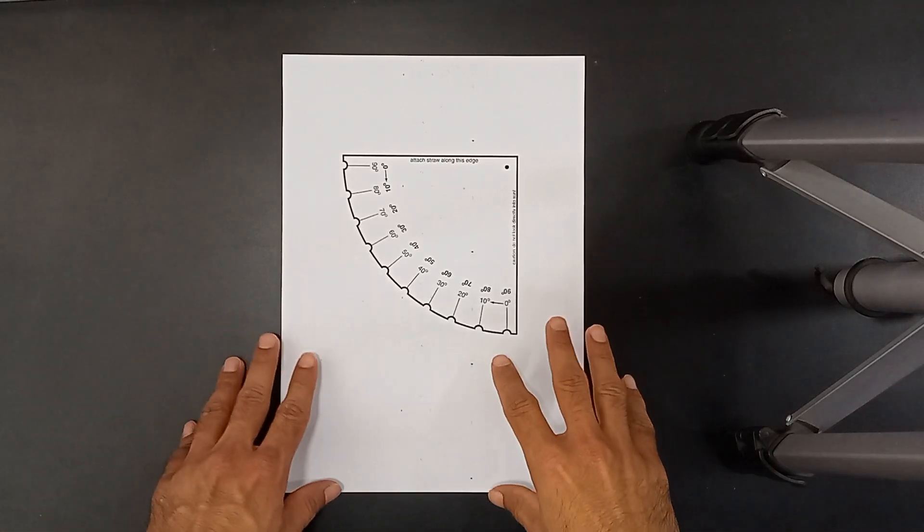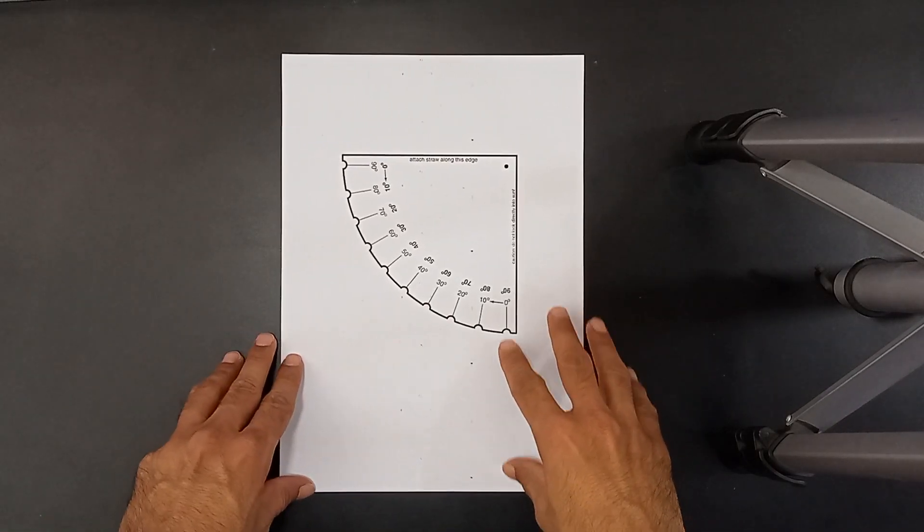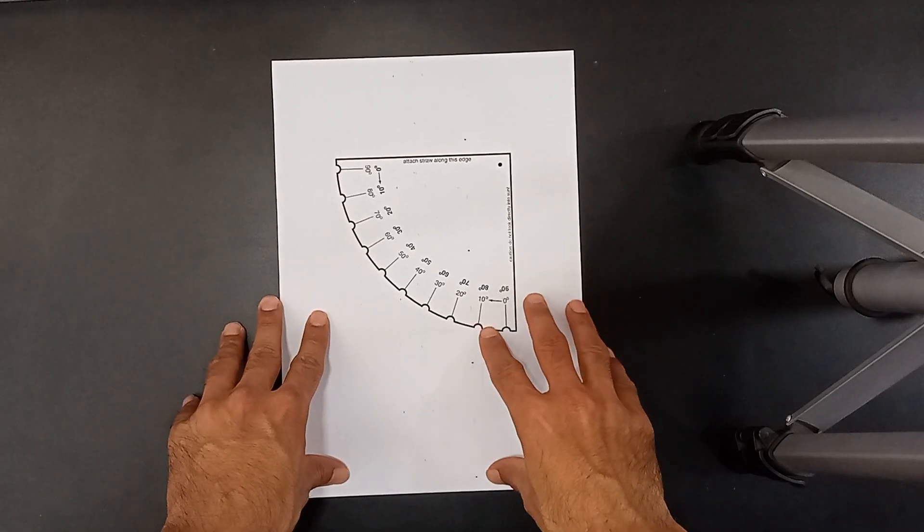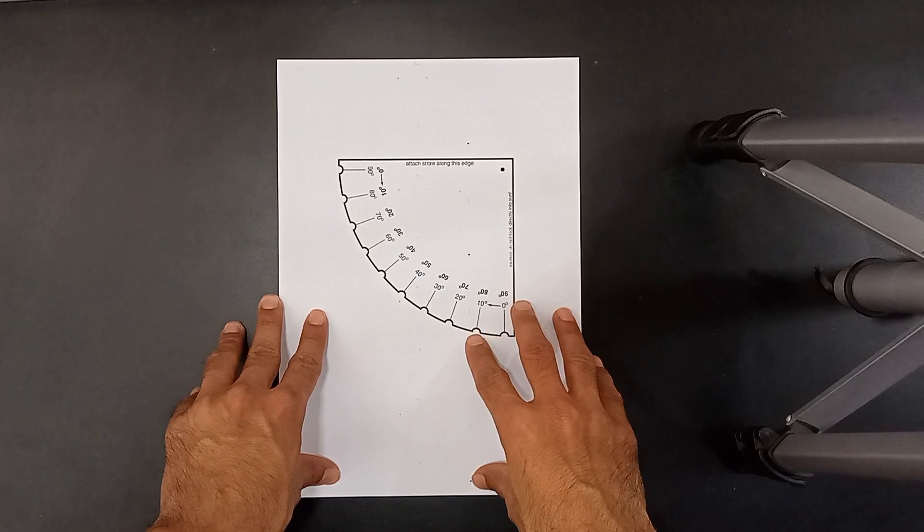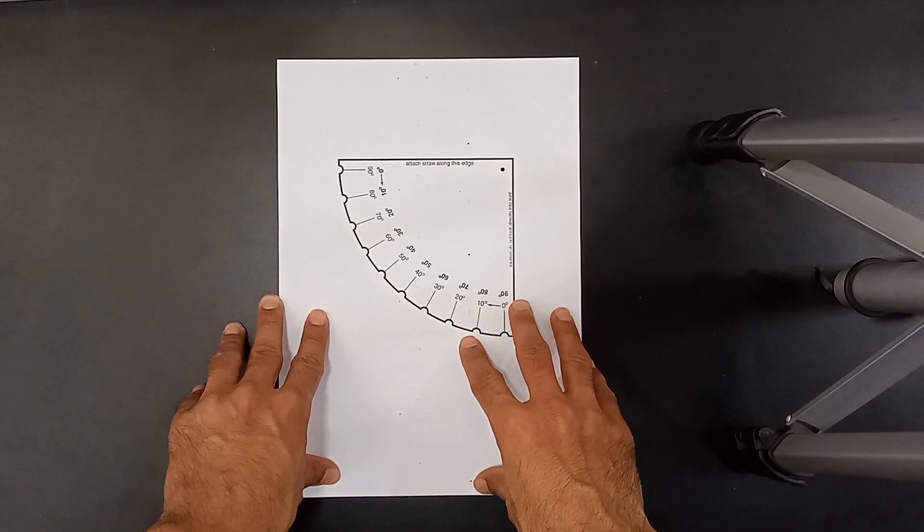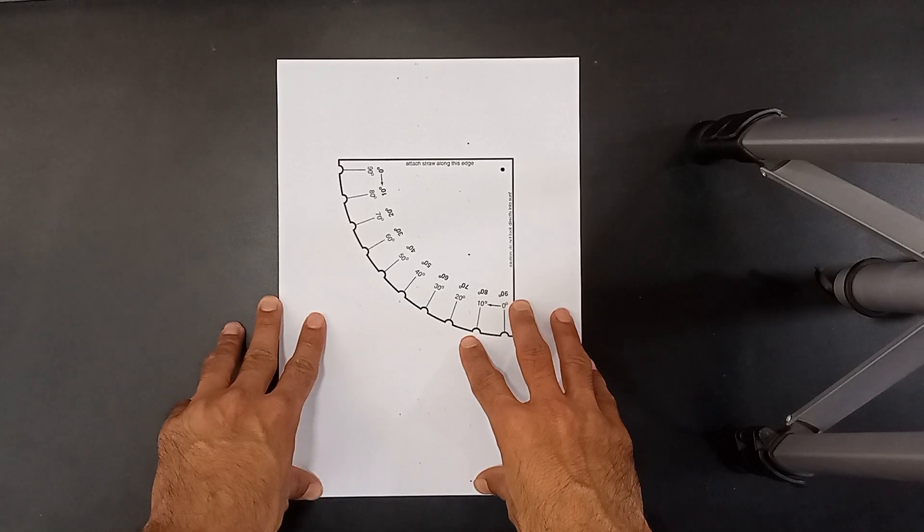Hello everyone, today in this video we are going to see how to make a simple astrolabe. Astrolabe is the tool that you can use to measure the angle of altitude of space objects in the night sky, mostly stars.